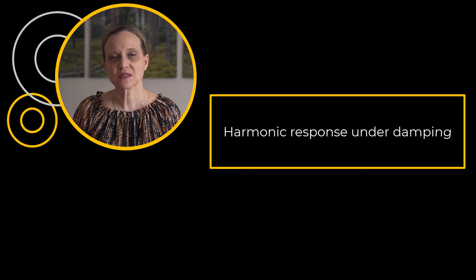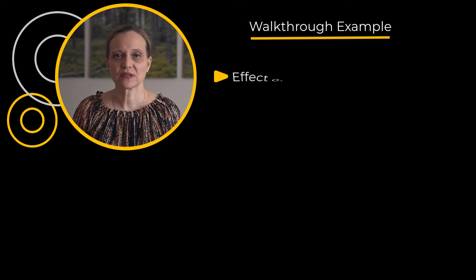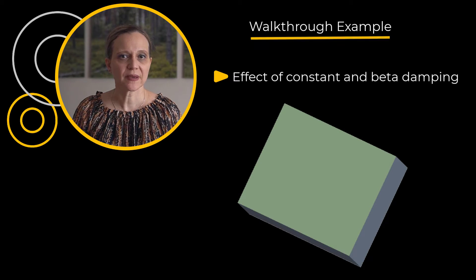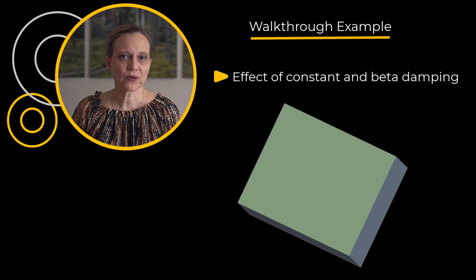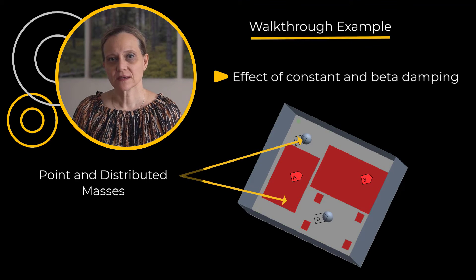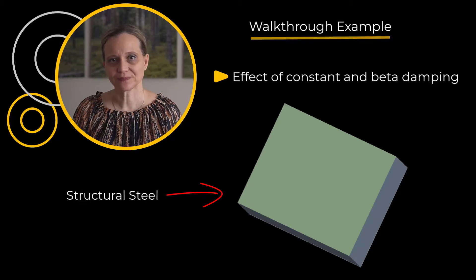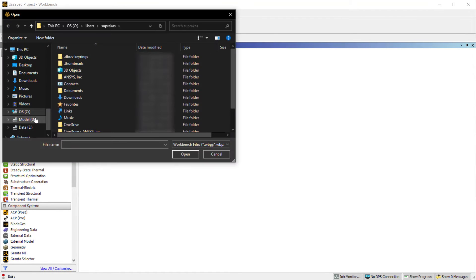Now let us move to a walkthrough example: the harmonic response analysis of a system under the effect of damping. In this walkthrough, we will show you the effect of constant and beta damping on an electronic enclosure exposed to harmonic-based excitation within the 200 to 350 Hz frequency range. Open the electronic enclosure WBPZ file. The modal analysis system is already set up on the project page. Open Mechanical.